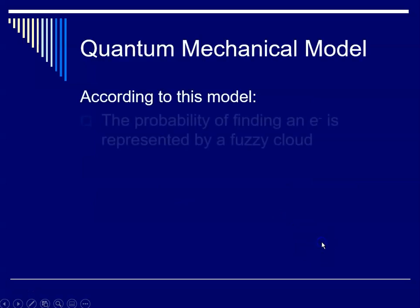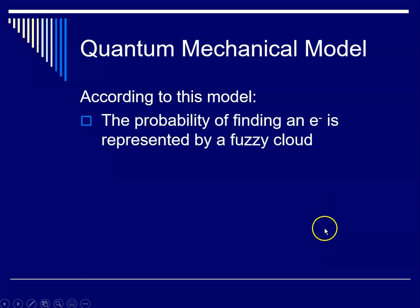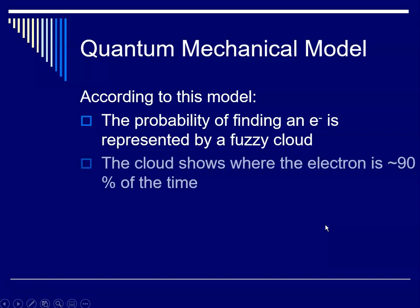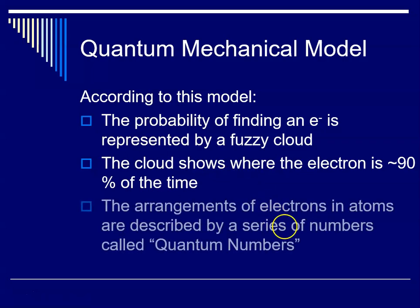According to this model, the probability of finding an electron is represented by a fuzzy cloud and the shape of the cloud shows the region of high probability to find an electron. The cloud shows where the electron is about 90% of the time. The arrangements of electrons in atoms can be described by a series of numbers called quantum numbers, derived by solving the Schrödinger equation.